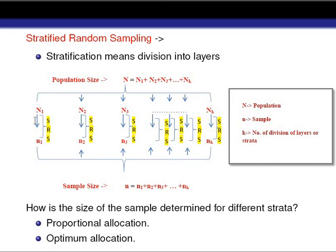The criteria which enables us to classify various sampling units into different strata is termed as the stratifying factor. Some of the commonly used stratifying factors are age, sex, educational level, income level, geographical area, economic status, and so on.